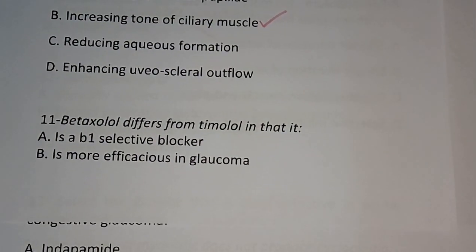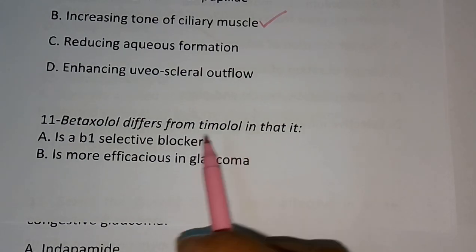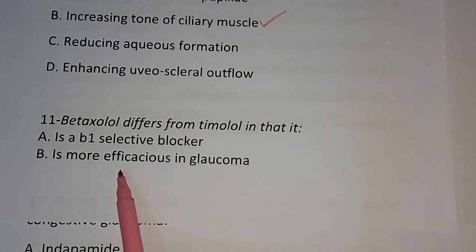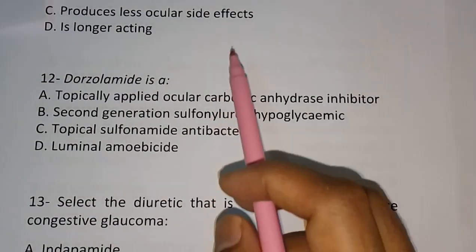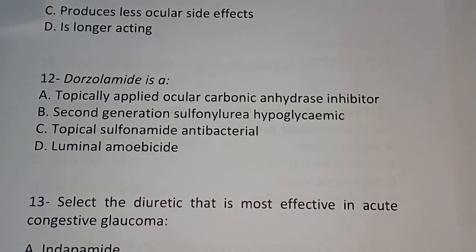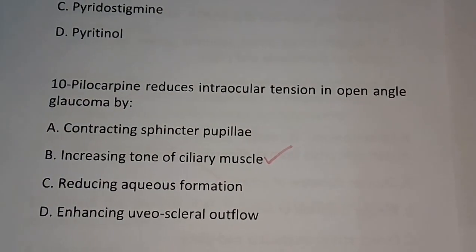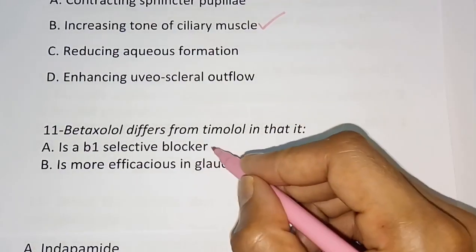Question number eleven: Betaxolol differs from timolol in that — (A) it is a beta-1 selective blocker, (B) it is more efficacious in glaucoma, (C) produces less ocular side effects, (D) it is longer acting. The correct answer is option A — betaxolol is a beta-1 selective blocker.